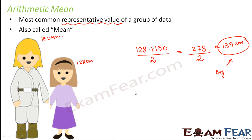When you look at 139, you see that 139 is greater than 128 and at the same time 139 is less than 150. So the average value is always a value which lies between the minimum value and the maximum value — somewhere in midway between 128 and 150. Here we have considered just two numbers, that is, just two girls.